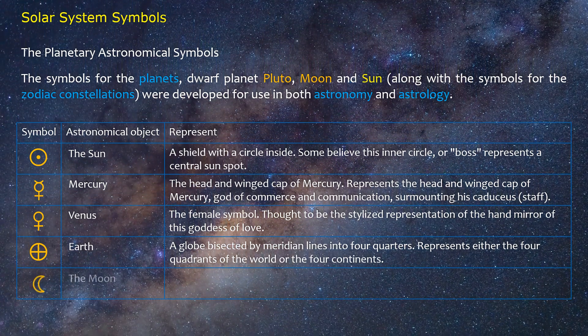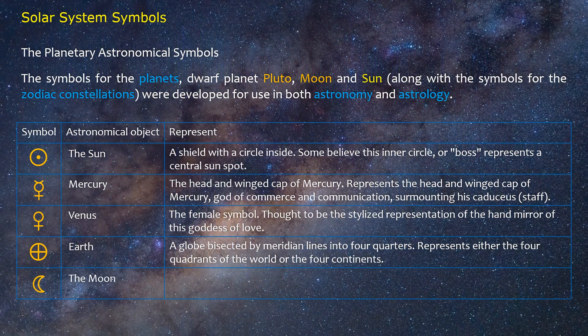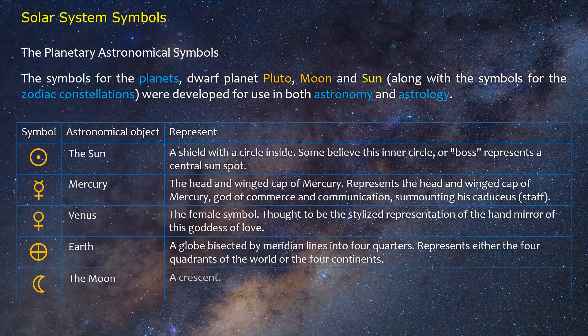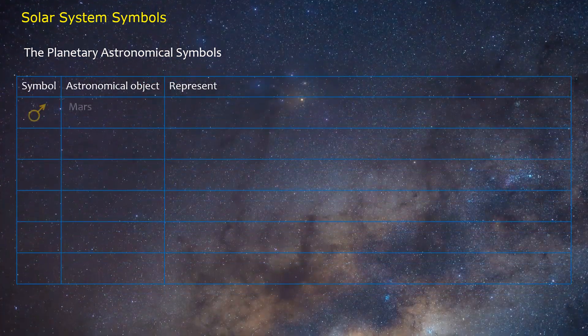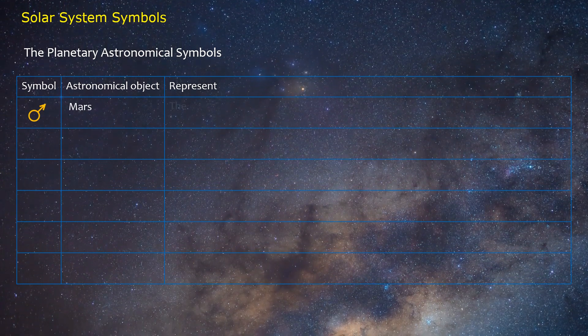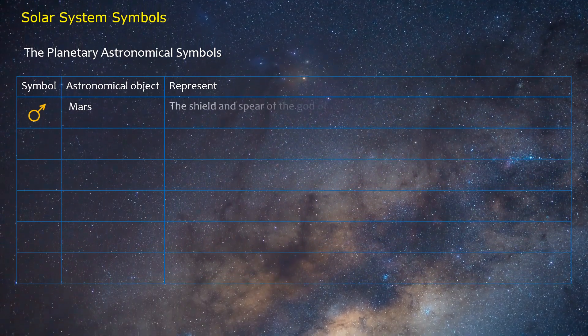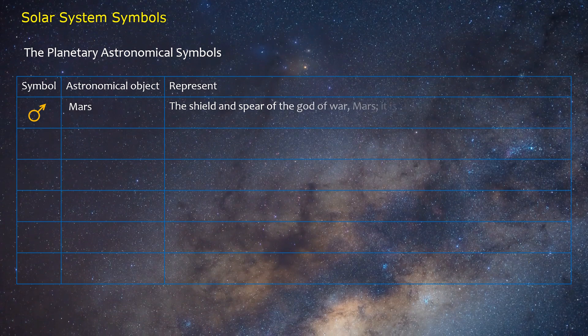The Moon: A crescent. Mars: The shield and spear of the god of war, Mars. It is also the male or masculine symbol.